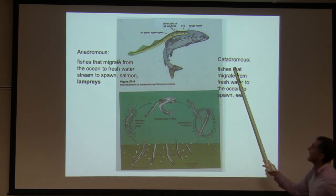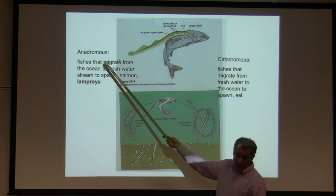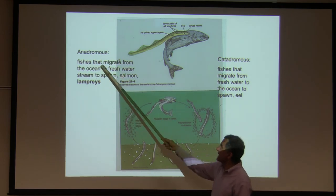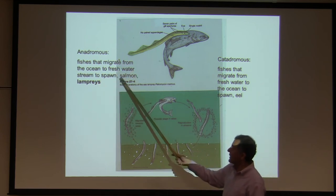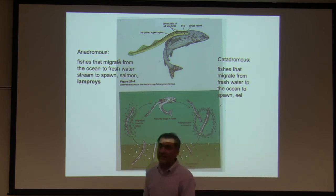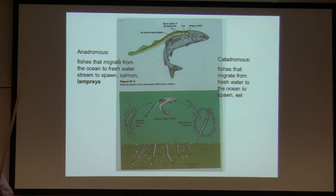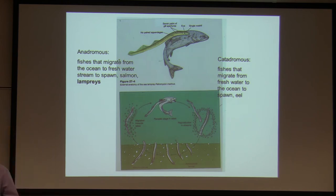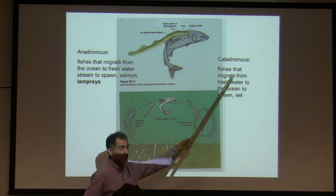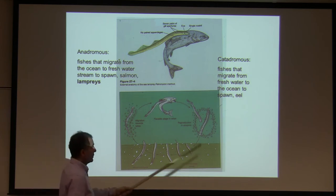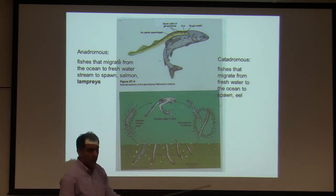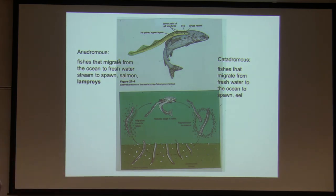Anadromous animals are fishes that migrate from salt water (the ocean) to fresh water streams to spawn. Salmon and lampreys are examples of anadromous animals — they go from sea to pond and lay eggs; some, like salmon, die after spawning. The opposite is catadromous animals — fishes that migrate from fresh water (lakes, ponds, rivers) to salt water to spawn. An example of that would be an eel — the kind you might eat at a sushi restaurant.